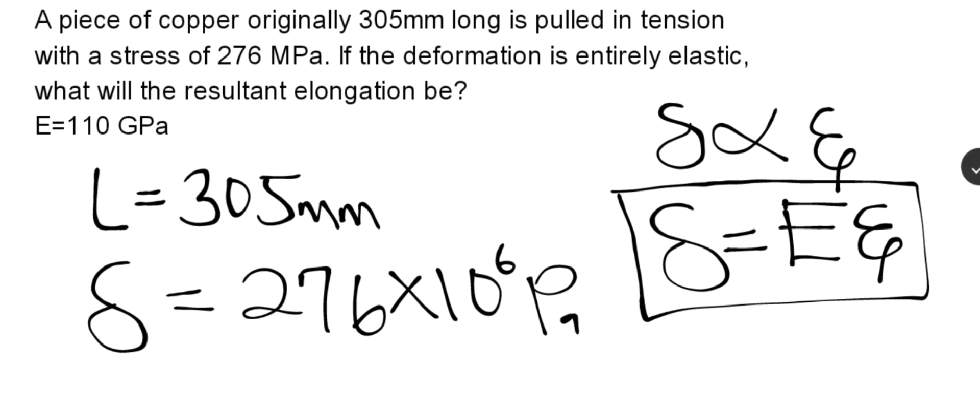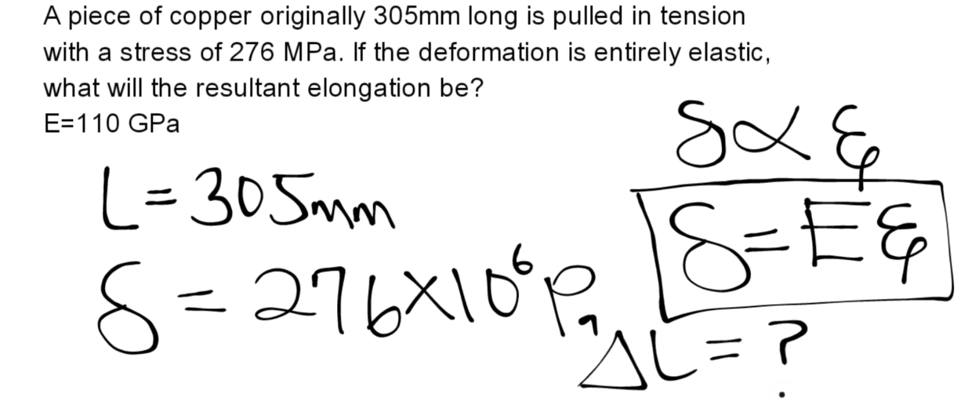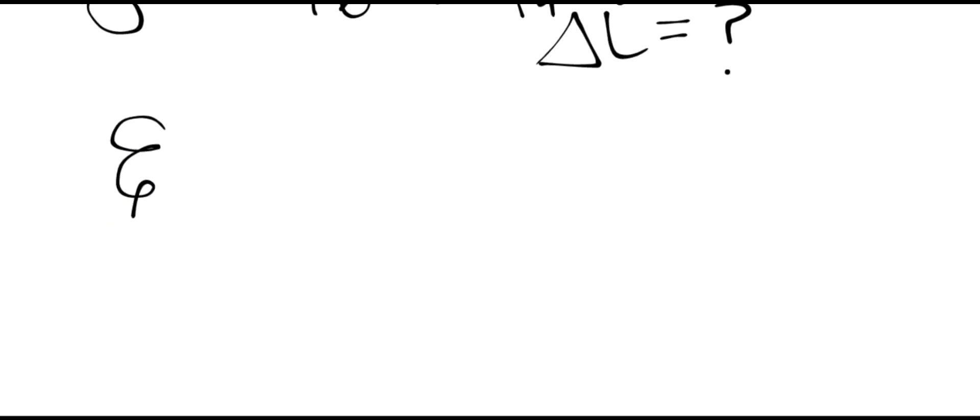The deformation is entirely elastic. Then what is going to be the resultant elongation? That is change in length, ΔL. This is what we are looking for. We know that the strain is equal to the elongation, that is the change in length over the total length.